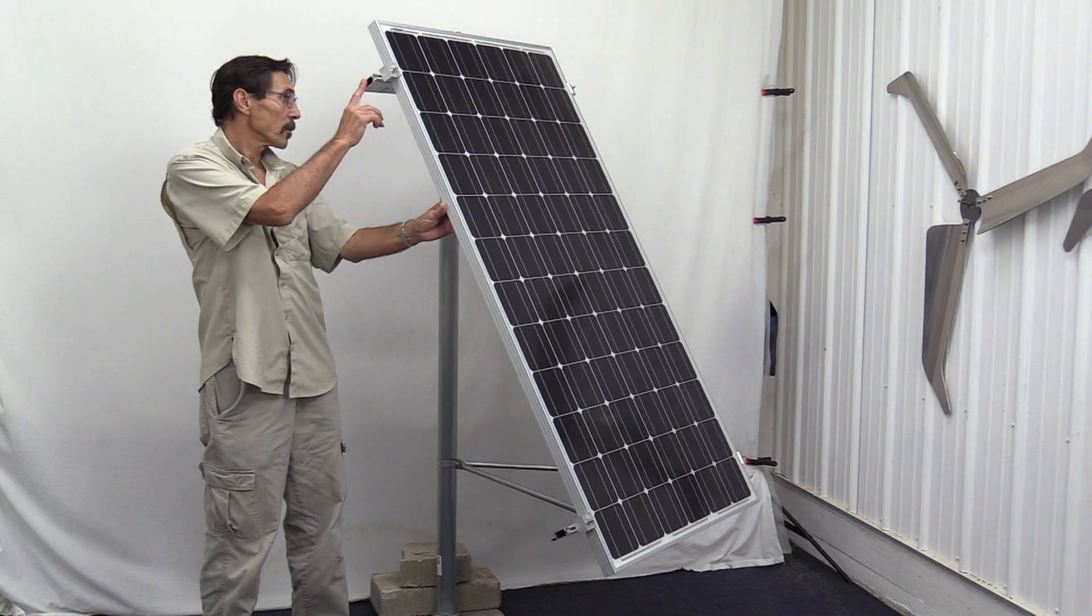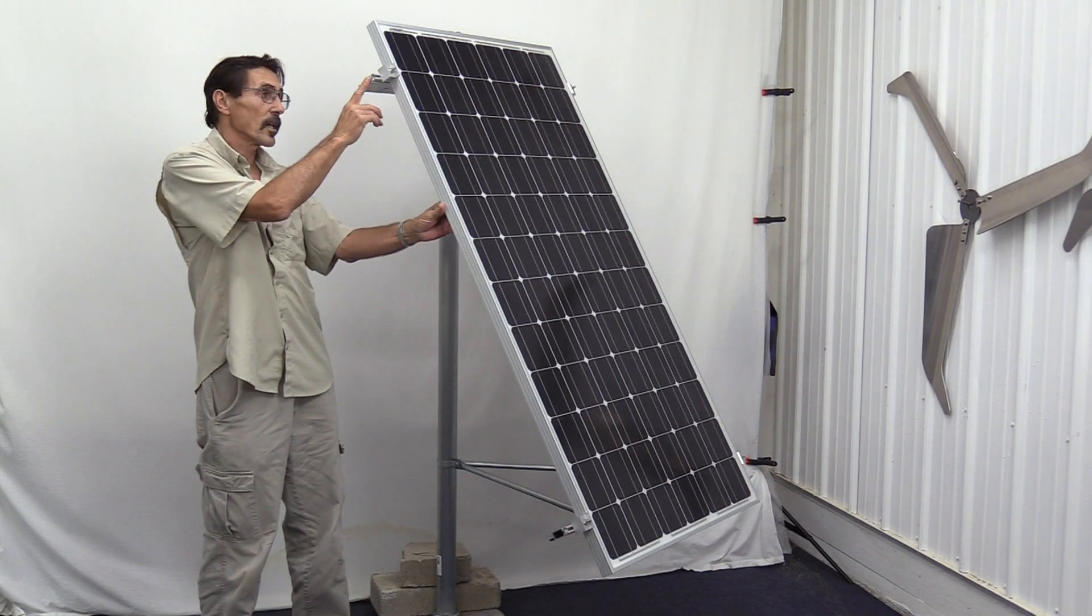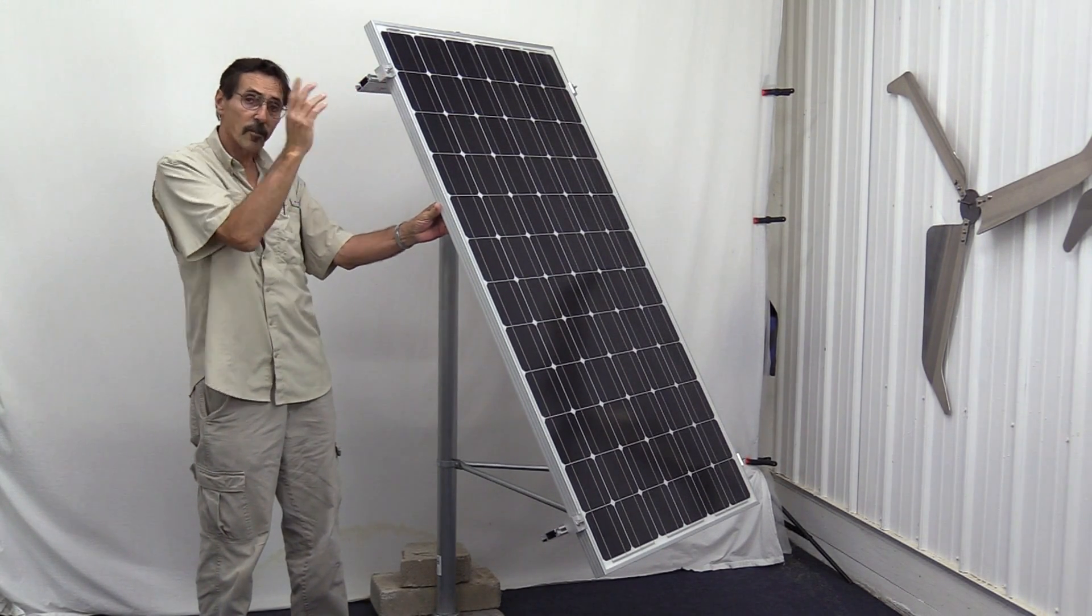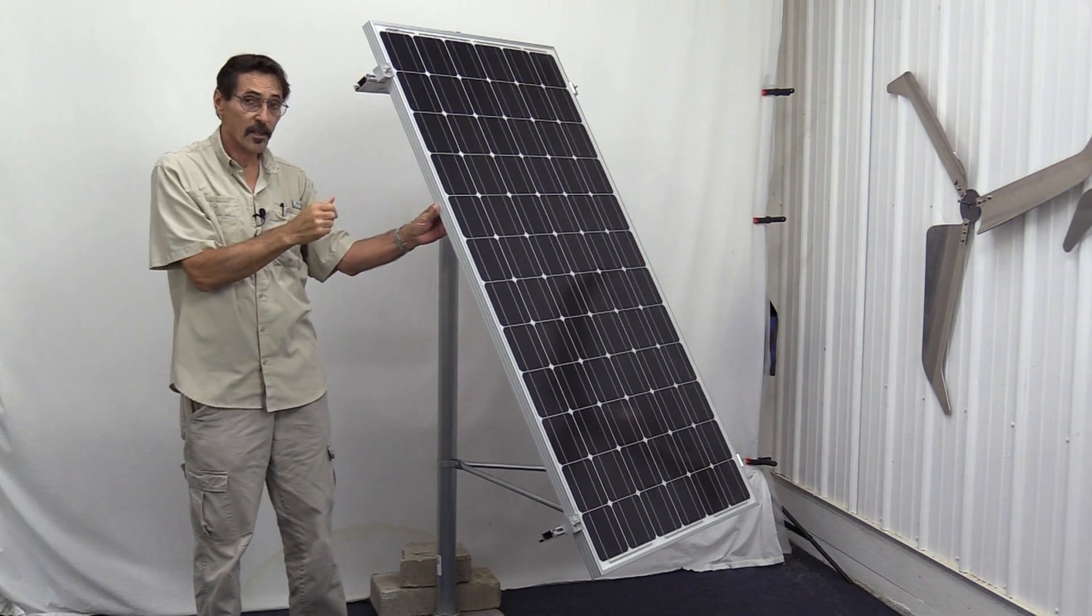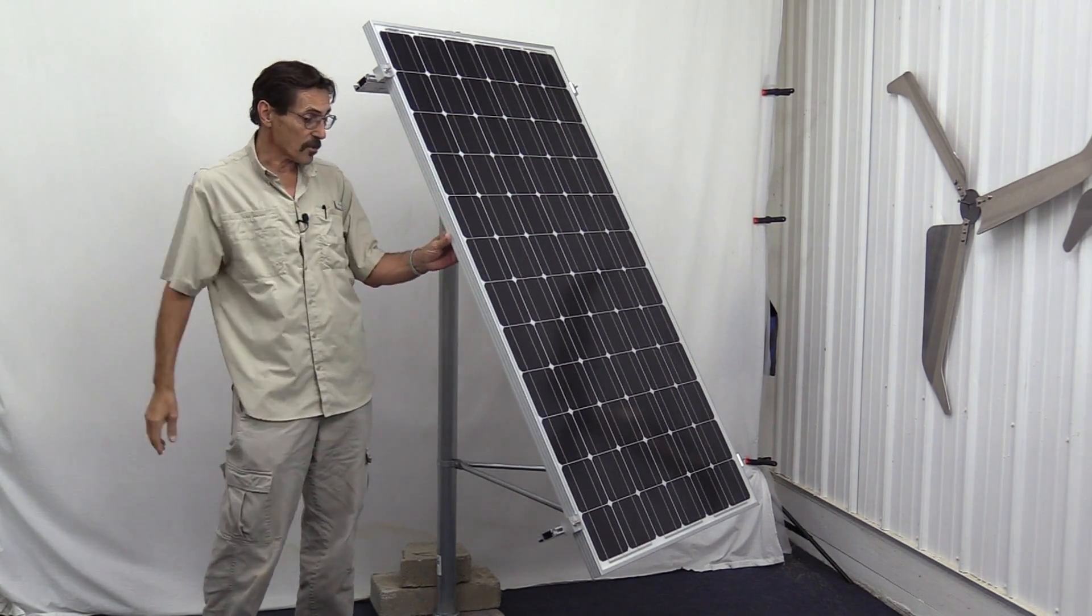Now, this solar panel, the side of the pole mount, has got three-foot rails, and this will come with different width rails for different sized solar panels. We have all the different clips in stock to fit the different thicknesses of solar panels.